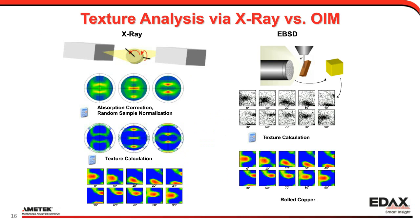We do this for several different pole figures, apply corrections for geometry and absorption, and eventually calculate a texture. For EBSD, we measure individual orientations — instead of measuring pole figures, we're measuring each orientation individually, and from that we can calculate the texture. The texture calculation mode is therefore a little different between the two. Nowadays, X-ray diffraction can measure multiple pole figures simultaneously, and with EBSD we can measure orientations very rapidly, so both can measure texture pretty quickly.